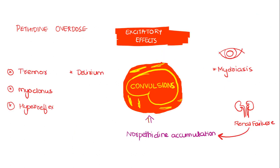Pethidine overdose can lead to tremor, myoclonus, hyperreflexia, delirium, and dilatation of the pupil (mydriasis). It can increase the risk of convulsions, especially in renal failure patients where accumulation of norpethidine is greater, further increasing the risk of convulsions.